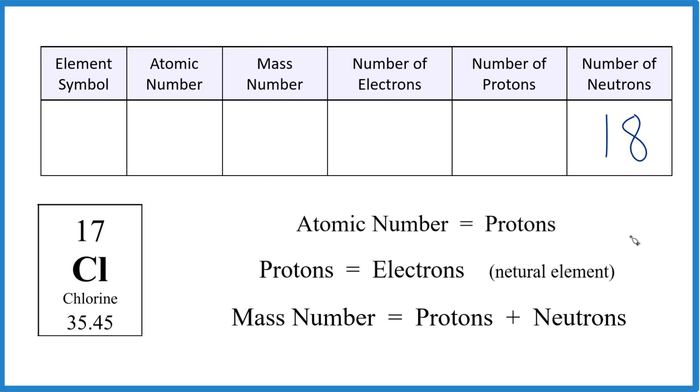This is the key information right here that we need to know. So we have chlorine right here, so the symbol, that's Cl. This here, this whole number on top, that is the atomic number, which is 17. And the atomic number, that's the number of protons. Number of protons, that's 17.